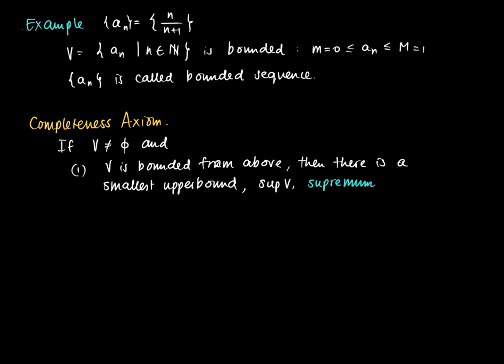So this is a supremum, and something similar holds for properties of V. If V is bounded from below then there's a largest lower bound. It's just the dual property of upper bound. So if we have a lower bound then we have a largest lower bound which is called the infimum of V.